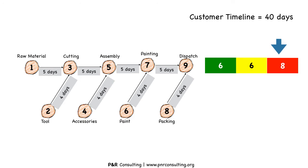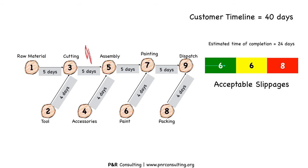What information would we be able to get out of buffer monitoring? When the penetration of a project is in green, as shown here, it indicates a normal situation and most variables are under control. Notice that the estimated time of completion is 24 days but the original estimation was 20 days. Still fine, because the customer's required timeline is 40 days, and finishing in 24 days is good enough. These slippages are normal and acceptable.